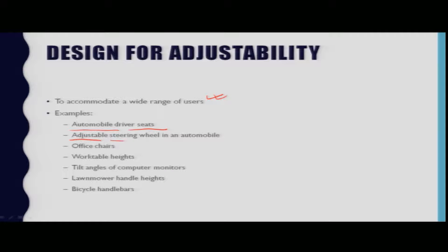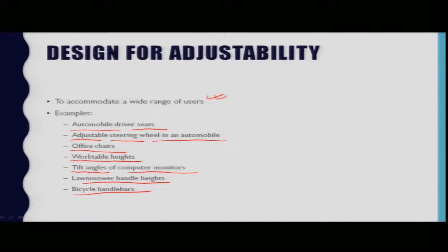Examples of adjustable product features include automobile driver seats, adjustable steering wheels in automobiles, office chairs, work table heights, tilt angles of computer monitors, lawn mower handle heights, and bicycle handlebars, and so forth.